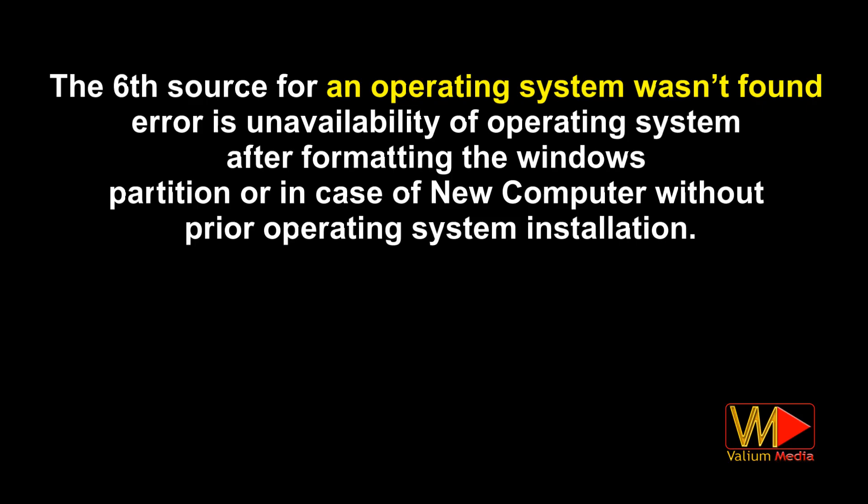The sixth source for the 'an operating system wasn't found' error is unavailability of the operating system — after formatting the Windows partition or in the case of a new computer without prior operating system installation. In these cases, you have to perform a fresh installation of Windows operating system to fix this error.